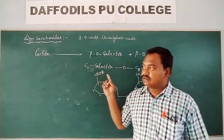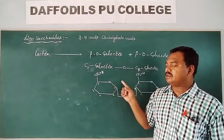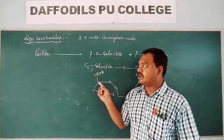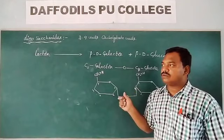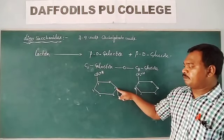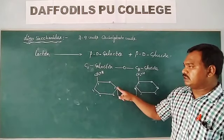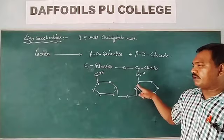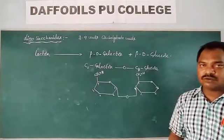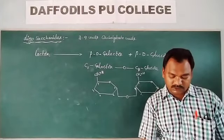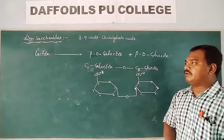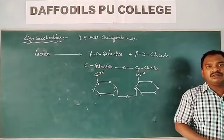So in oligosaccharides, sucrose is the only non-reducing sugar — the remaining disaccharides are reducing sugars. Sucrose is non-reducing because the first carbon of glucose makes a bond with the second carbon of fructose, so all the functional group-containing carbons are involved in glycosidic bond formation. This is about oligosaccharides. We have another topic — polysaccharides — which we will discuss in the next class.